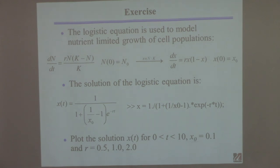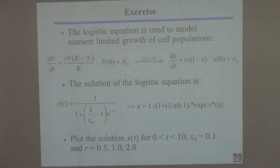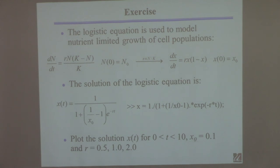The easiest way to do this problem is, at the command line, define your variables first: for example, x0 = 0.1, then r1 = 0.5. The equation I've written up there assumes you've already defined R — otherwise you'll get an error saying 'what's R? I've never heard of R.' So you have to define x0 and r. I called it r1, and I'd put r1 in the equation to calculate x1; for r2, calculate x2; for r3, calculate x3.